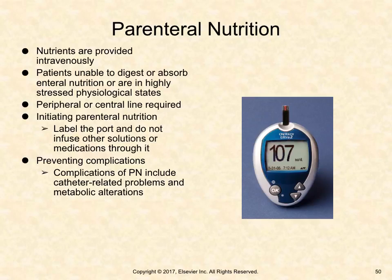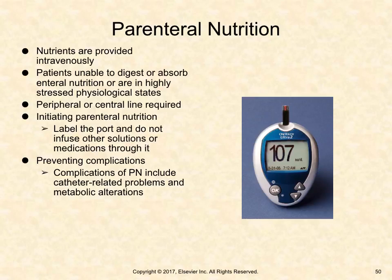Parenteral nutrition refers to nutrients provided intravenously, appropriate when patients are unable to digest or absorb enteral nutrition or are in highly stressed physiological states, though the goal to use the GI tract remains constant. Parenteral nutrition with greater than 10% dextrose requires a central venous catheter (CVC) placed into a high-flow central vein such as the superior vena cava under sterile conditions. Parenteral nutrition with less than 10% dextrose can be administered via a peripheral line. When initiating parenteral nutrition, label the port and do not infuse other solutions or medications through it. Complications include catheter-related problems and metabolic alterations.